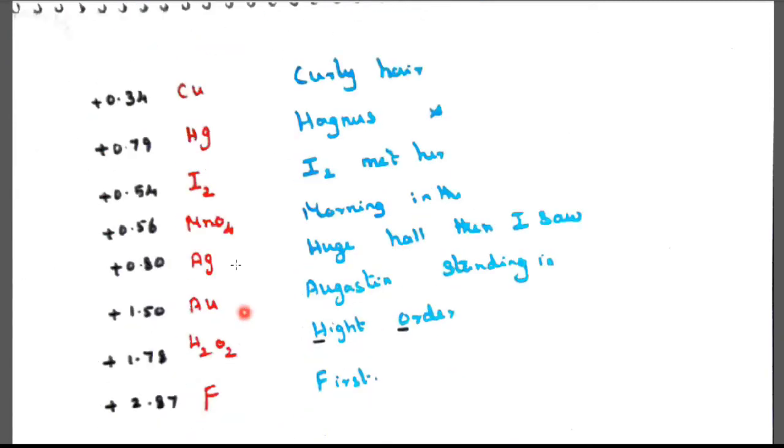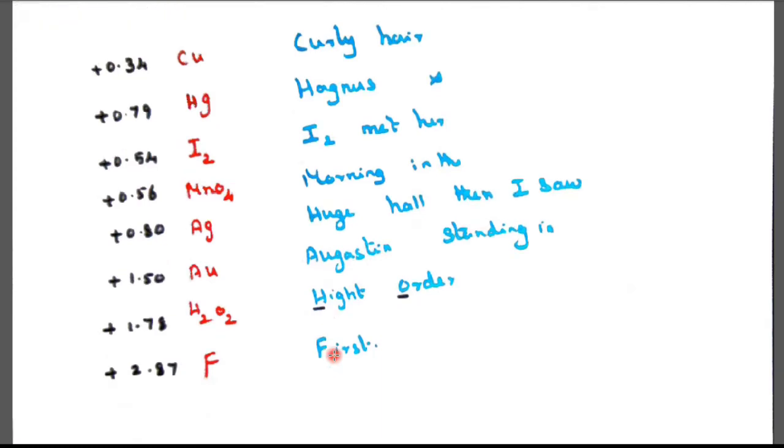Next thing is very least active metals are copper Curly air, Mercury Agnes, iodine I₂, silver Ag, gold Au, hydrogen peroxide H₂O₂ and Fluorine. So Curly air, Agnes and I₂ met her morning in the huge hall. Then I saw Agustin standing in height order first.